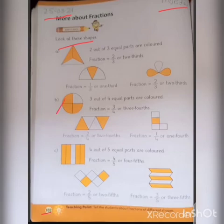Now B, the first shape is a circle. How many parts are in the circle? The circle has four parts. Which parts are colored? Three parts. Three out of four equal parts are colored, so its fraction is 3/4 or three-fourths.